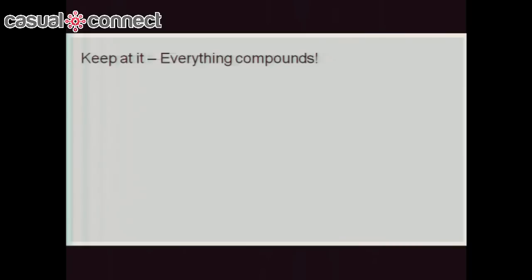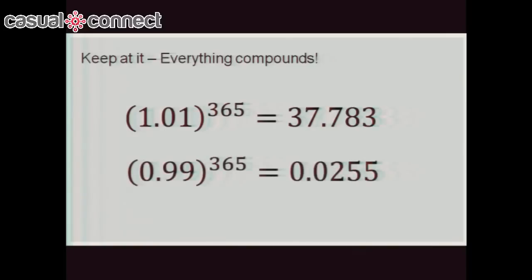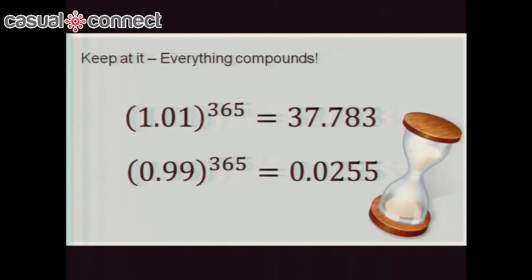Keep at it — everything compounds. A 1% improvement over 365 days gives you a 37-fold increase after a year. A 1% decrease over 365 days? You've only got 2.6% of your users left by the end. Just that little improvement every day makes huge differences.